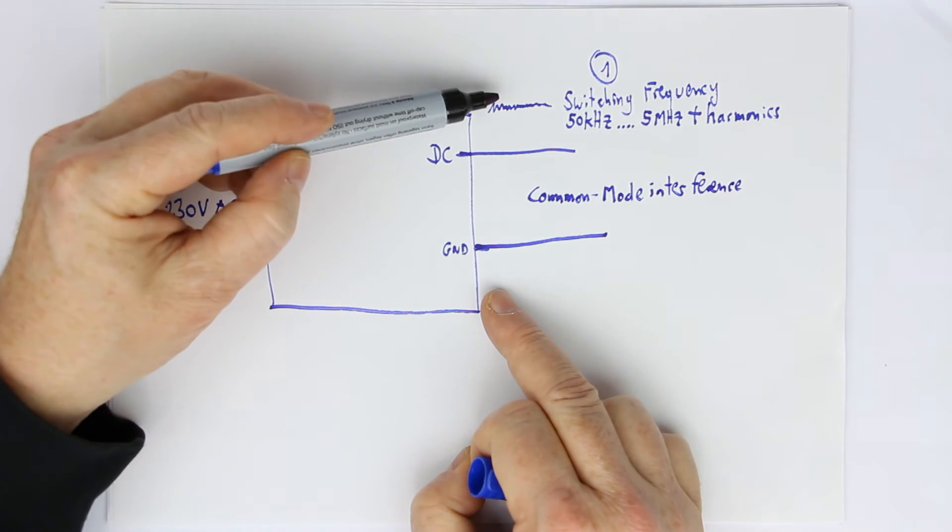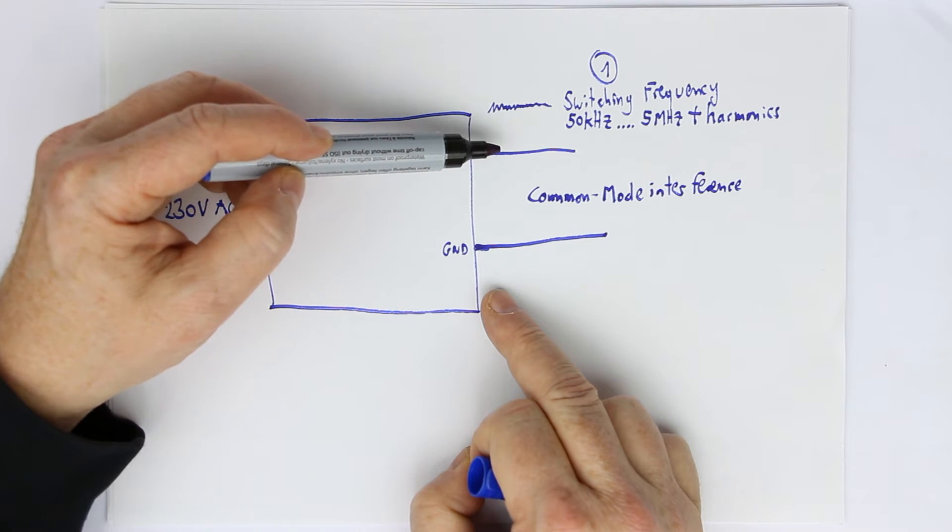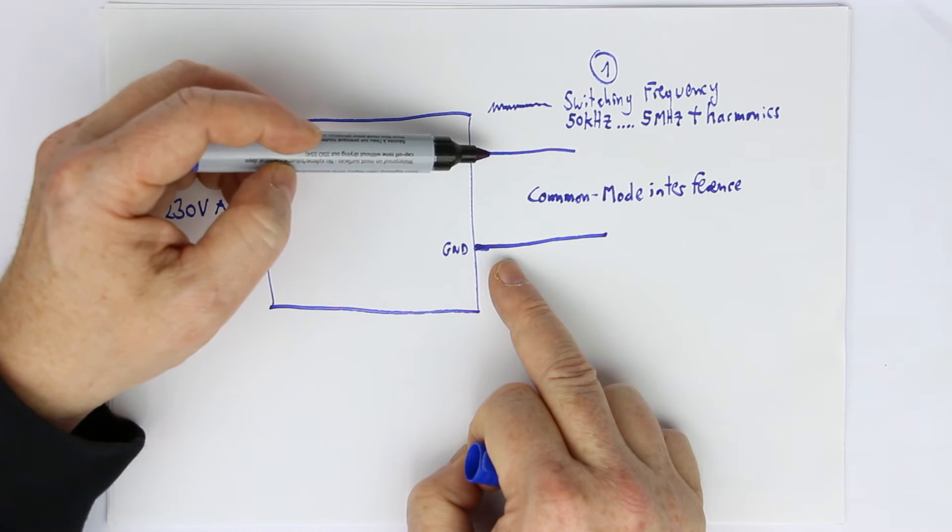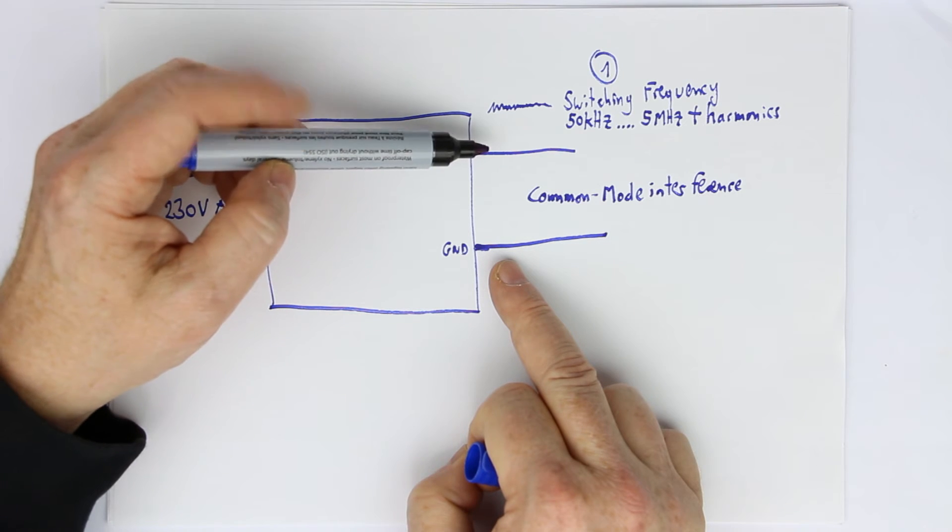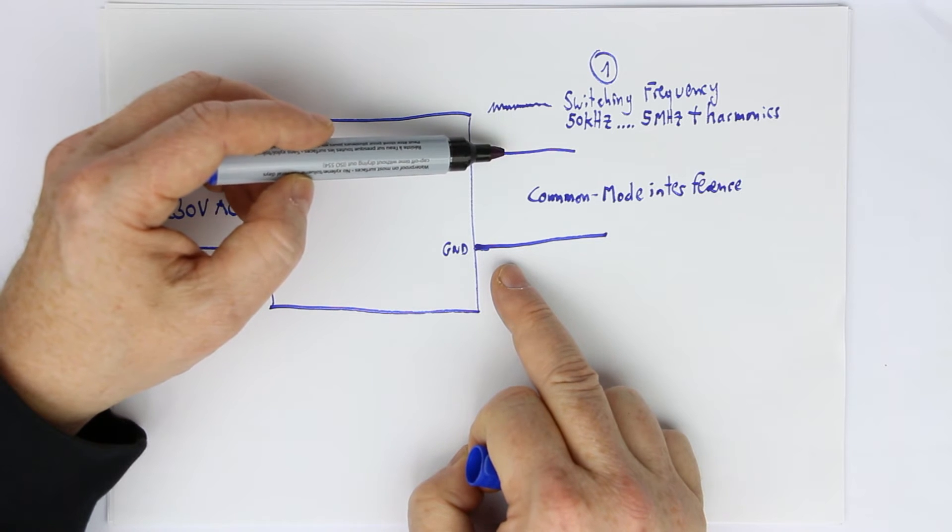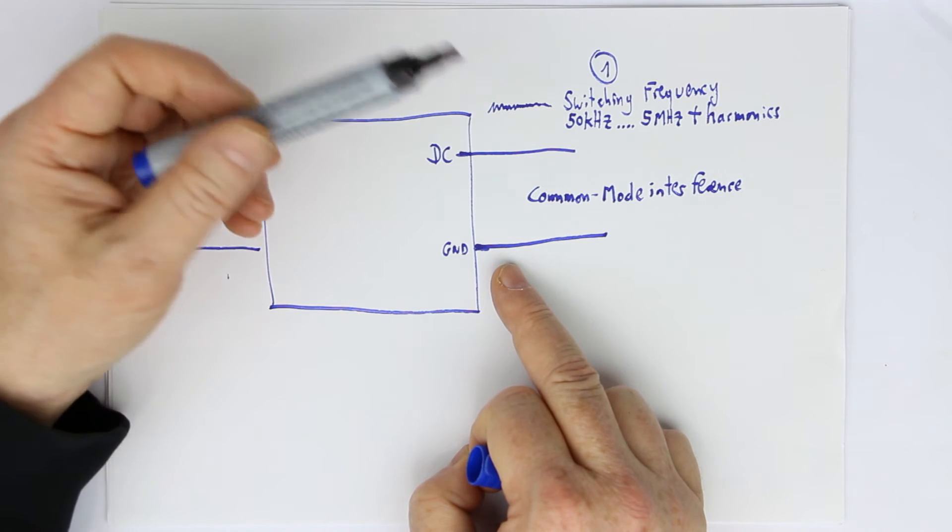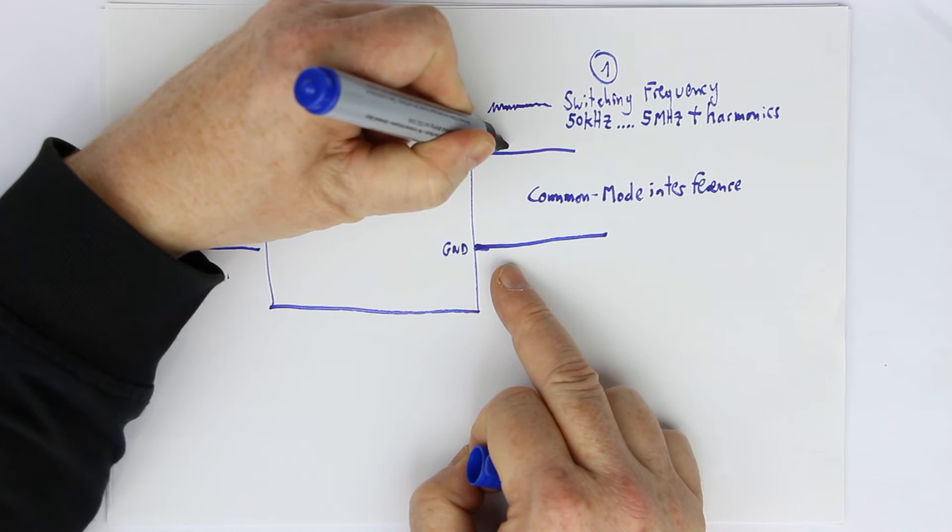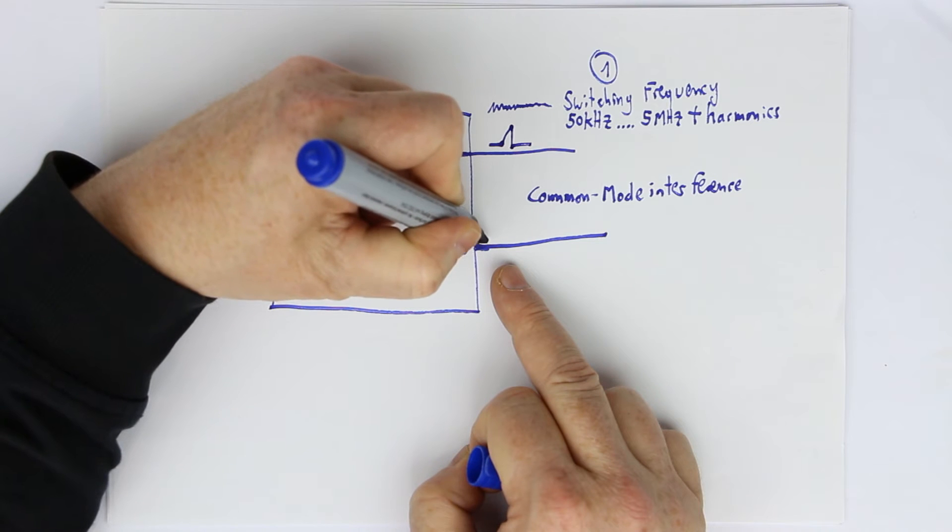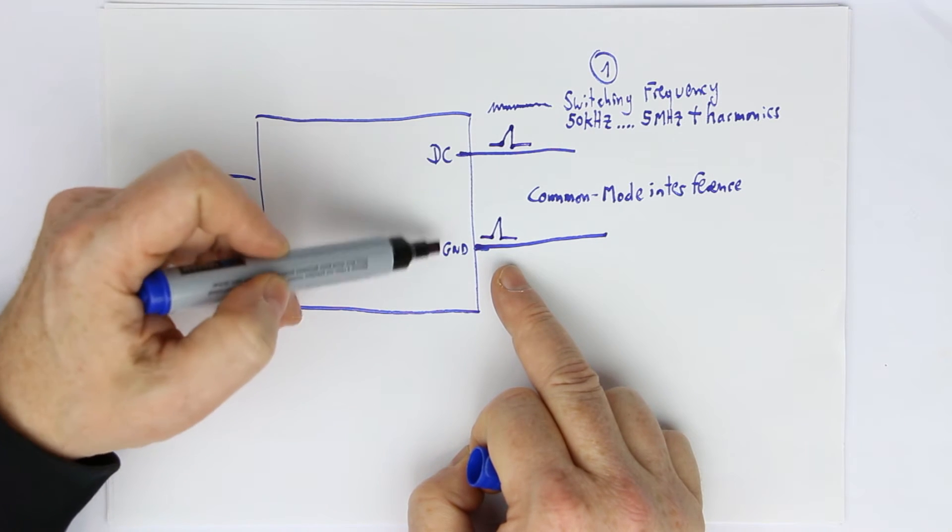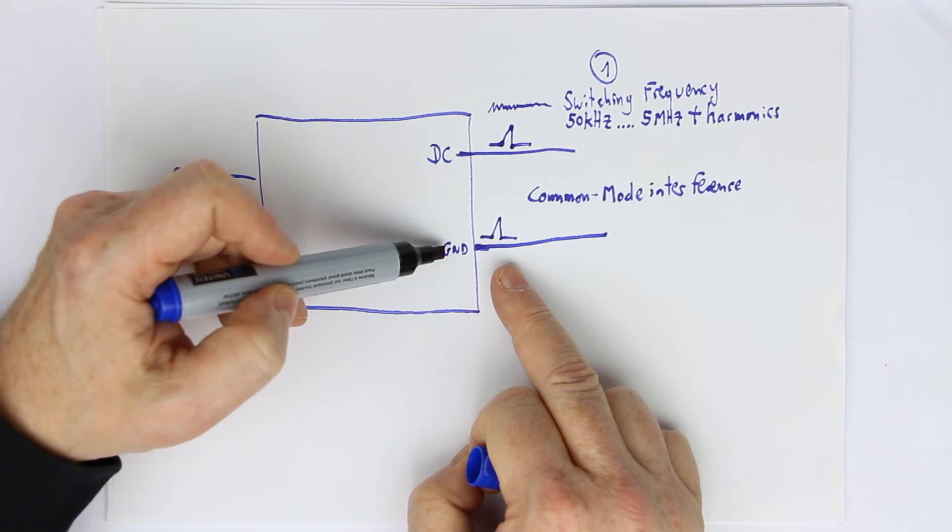The noise from the switch mode power supply is referenced to ground. We'll later see in part three how you can relatively easily filter this out. But what do you do if you have a signal that has the same amplitude on the DC and on the ground level?